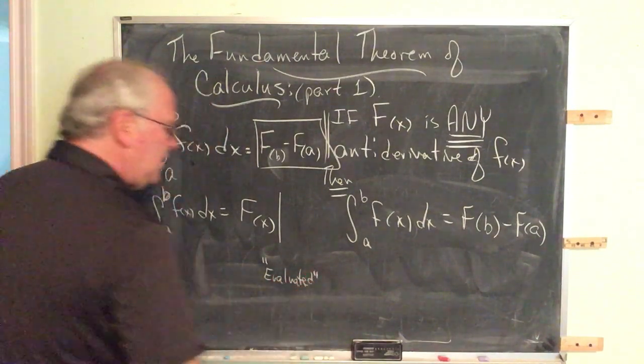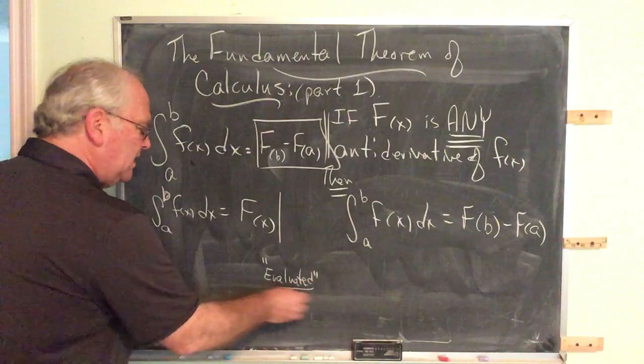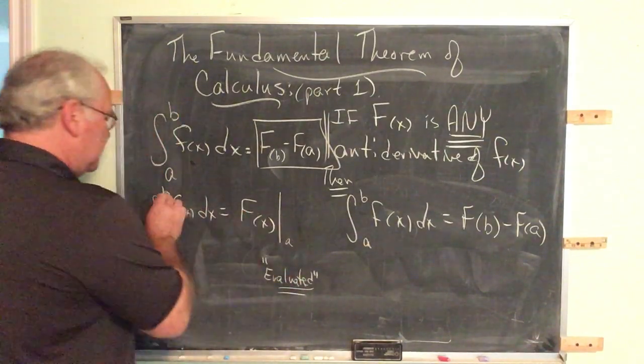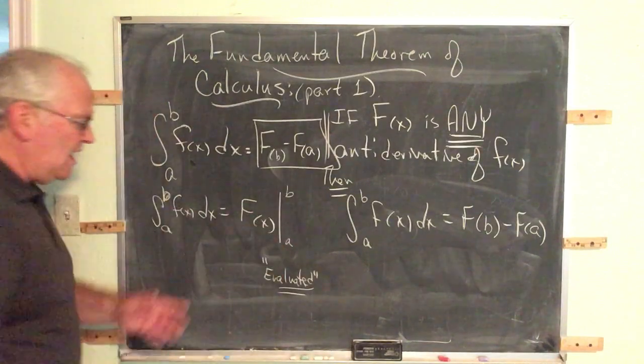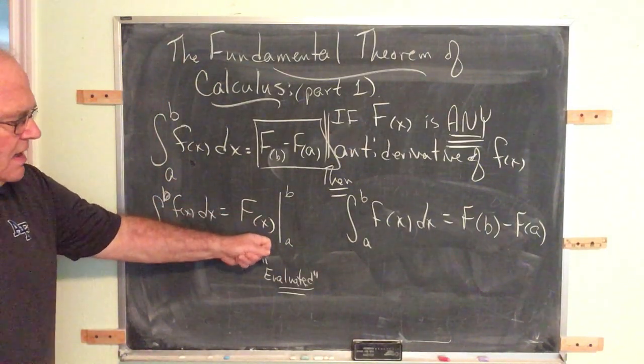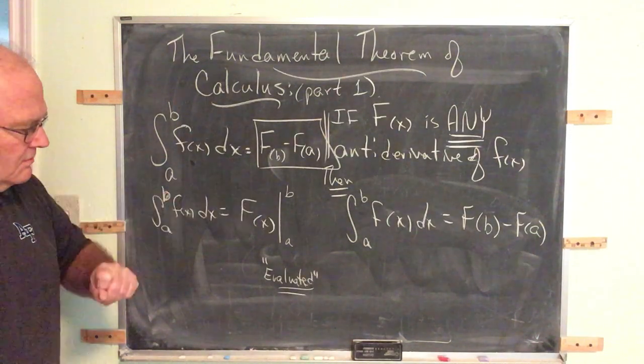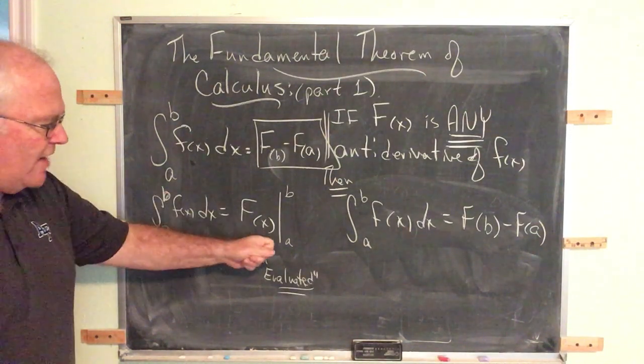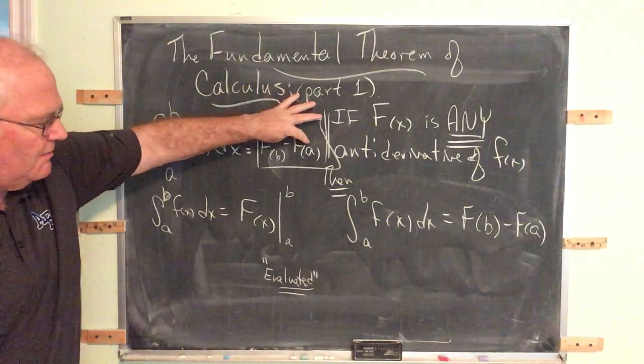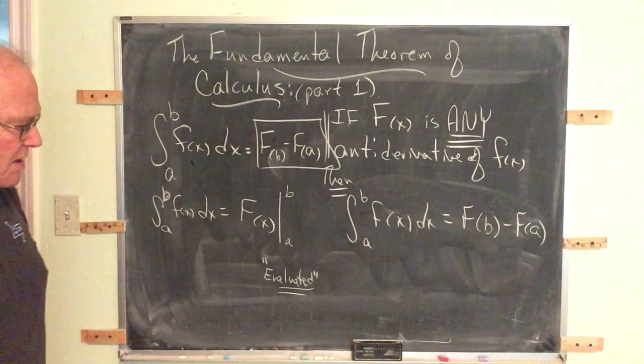Sometimes you'll say evaluated from, but evaluated, and then at the bottom you put the lower limit of integration, and at the top you put the upper limit of integration, and we read this as cap F of x evaluated from A to B. Even though we read it, evaluated from A to B, you compute the upper limit of integration first, and then subtract the lower limit of integration.